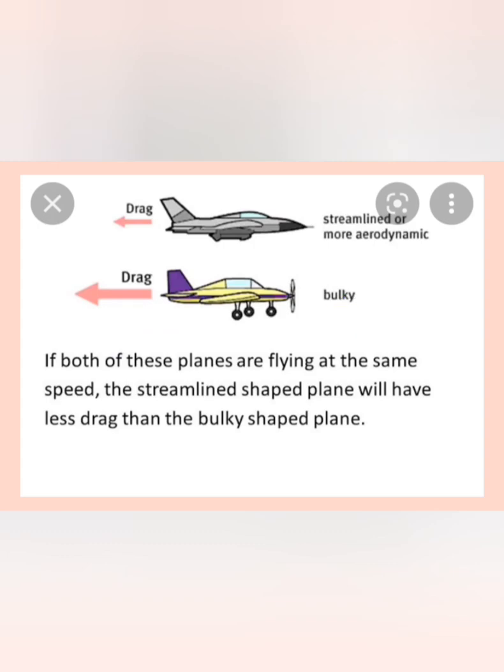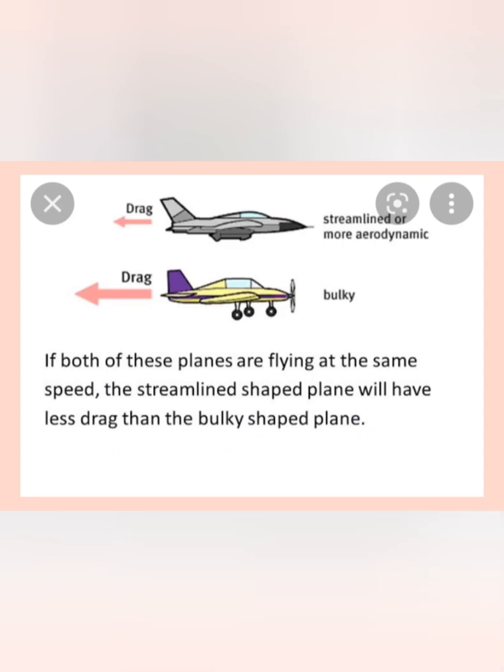If both planes are flying at the same speed, the streamlined plane will have less drag than the bulky-shaped plane. Hence, streamlining the object reduces fluid friction, which allows the object to move faster.